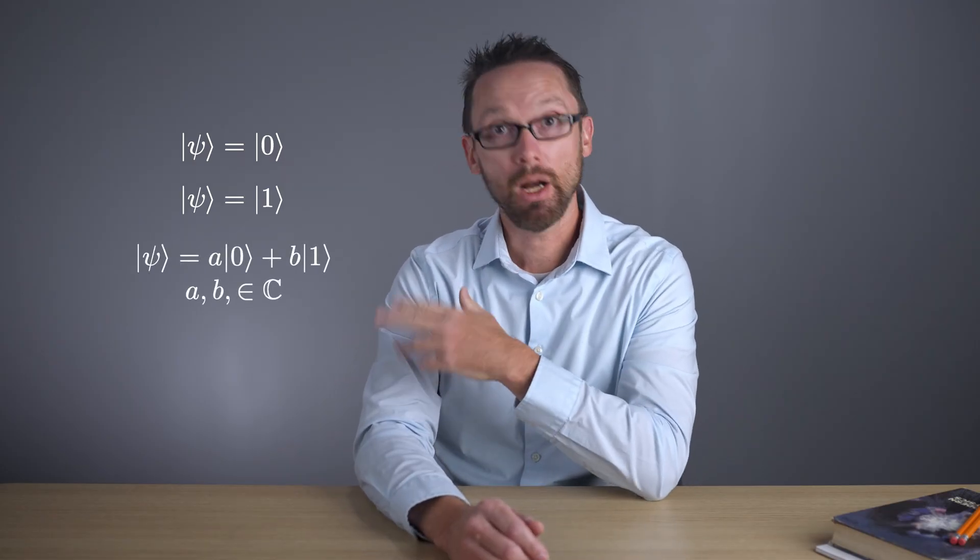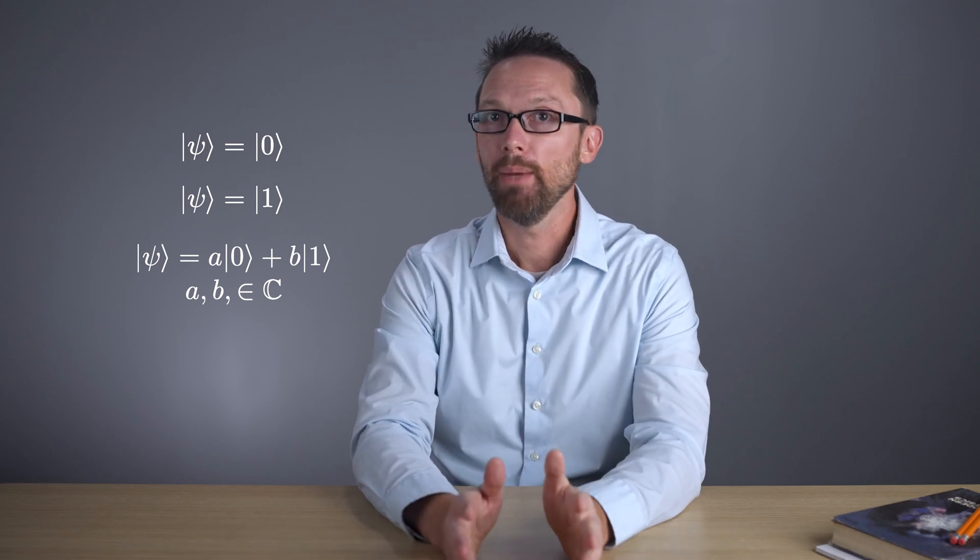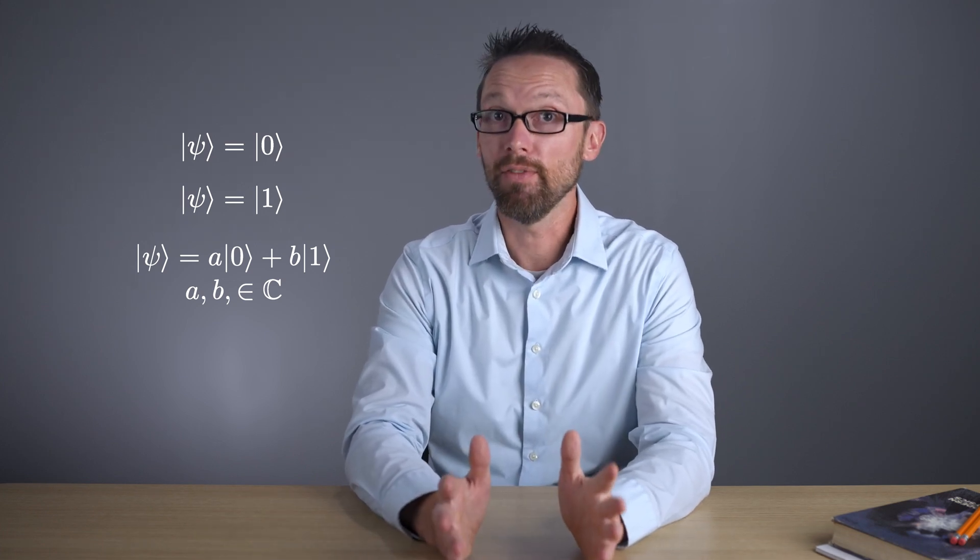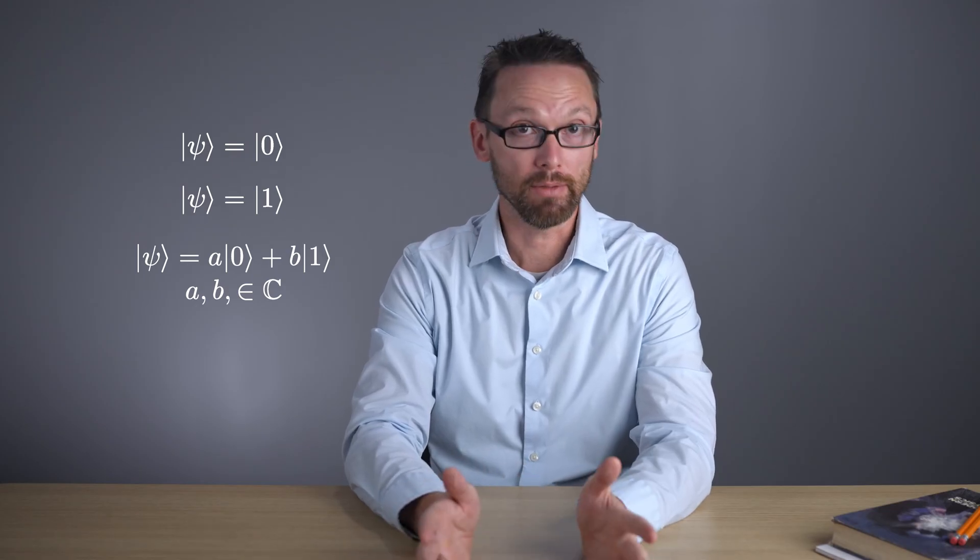Here, a and b are complex numbers, and these coefficients, a and b, are very important because they tell us about the probability of measuring the qubit to be in the state zero and one, respectively.